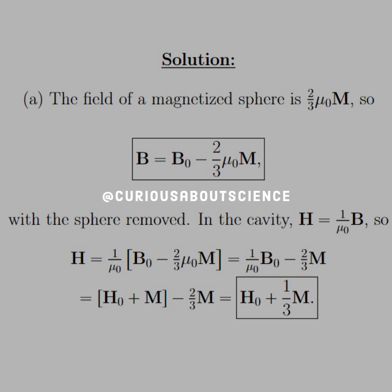Now we'll jump on in. The field of the magnetized sphere is 2-thirds mu-naught M. So we just put that together. Therefore, B is equal to B-naught minus, since we have to remove it, 2-thirds mu-naught M.